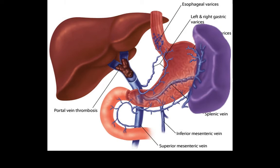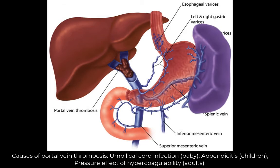Causes of portal vein thrombosis depend on age. Newborns may have it secondary to infection of the umbilical cord. Older children may get it from spread of infection from appendicitis. Adults can have it from polycythemia, cancer, or blood stasis from pregnancy or surgery.